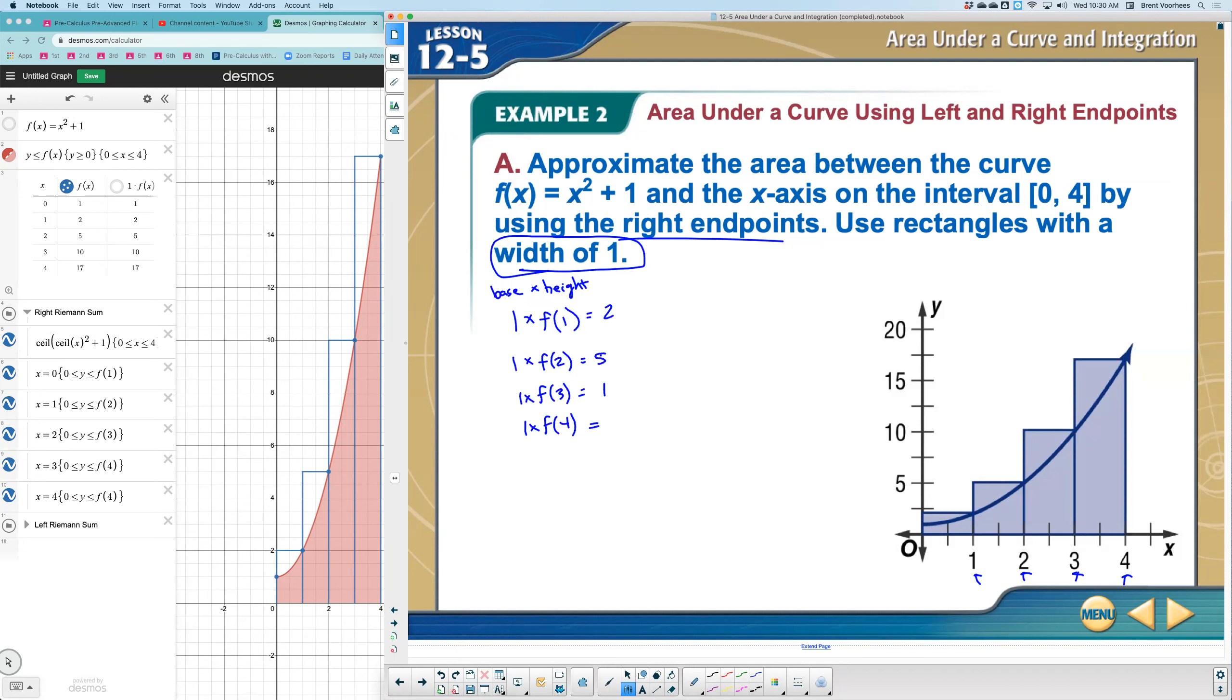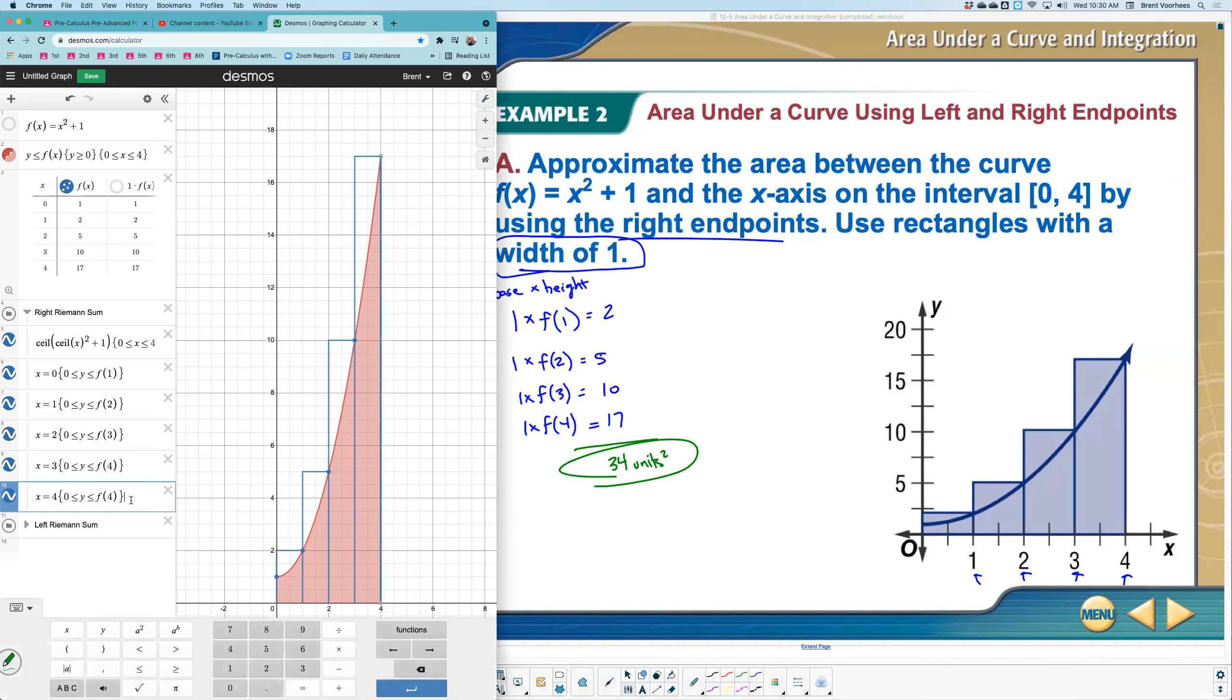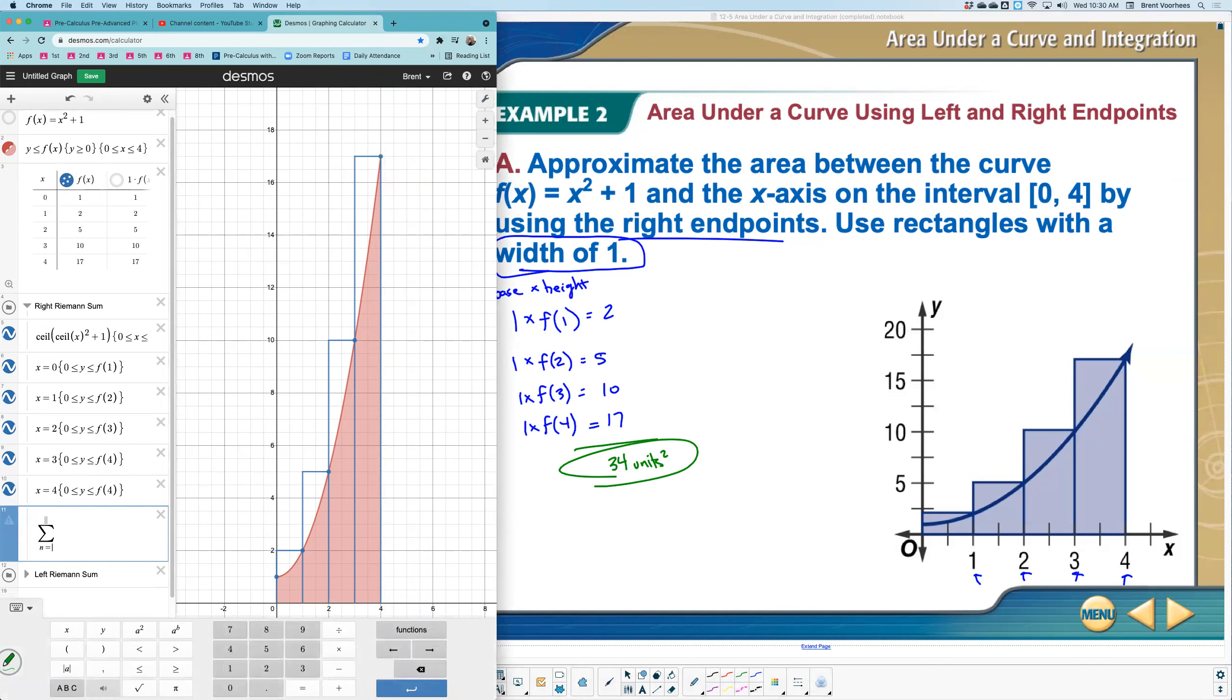And then we'd have a 10 and 17. And if you added that up, you'd get the area in units squared. Two plus five is seven, plus 10 is 17, plus another 17 is 34. So this is 34 units squared. And by the way, if you remember from chapter 10, we learned about how to find that sum using the symbols, the sigma. And so the way you would work this is we were going from the right endpoints where the numbers one to four, from one to four.